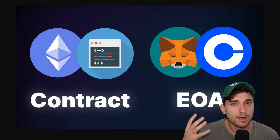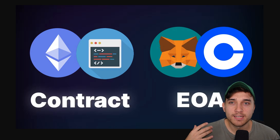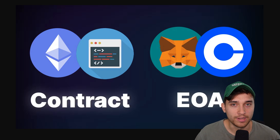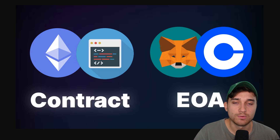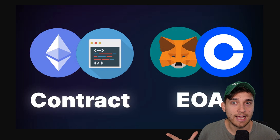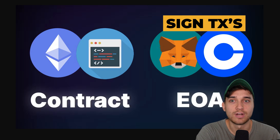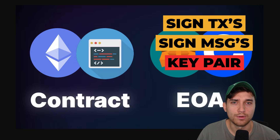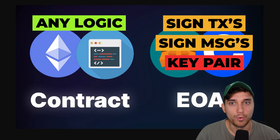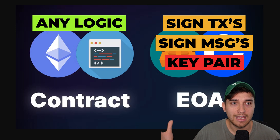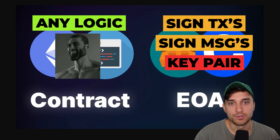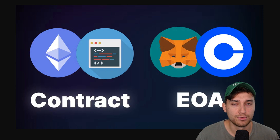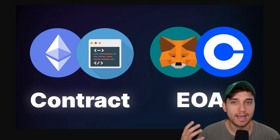If you have no idea what account abstraction is, I would suggest checking out my other video for a 10-minute explainer. Essentially, it means you can use smart contracts as your wallet or account over what is called an EOA, or externally owned account. If you've ever used a wallet like MetaMask or Coinbase Wallet, you're using an EOA, which has essentially two capabilities: signing transactions and signing messages. It's a very all-or-nothing approach controlled by a single private key. Whereas with smart contract accounts, you can have any logic built in with code — so everything you can write in code is a capability. The main benefits include things like social recovery, having multiple signers on an account, or changing the signer on an account.